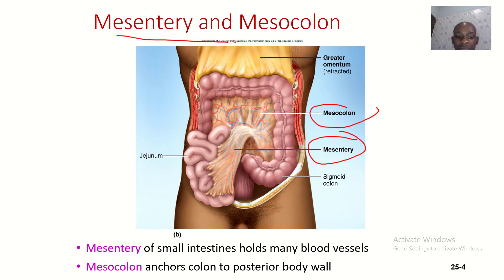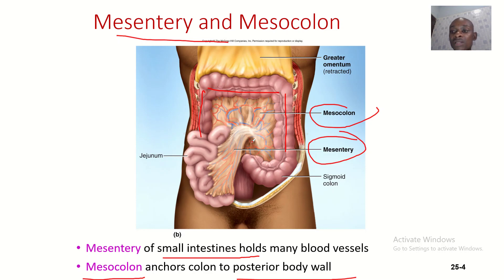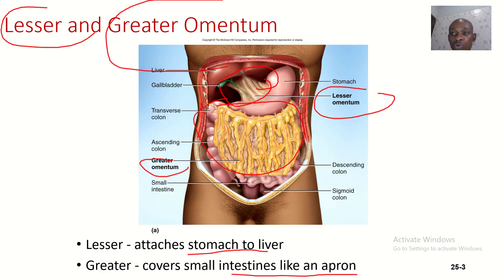Now for an overview of the mesentery and mesocolon: the mesentery of the small intestine holds many blood vessels and attaches the small intestine to the posterior abdominal wall. The mesocolon anchors the colon to the posterior abdominal wall. Here you can see the transverse colon, the ascending colon, and the descending colon — what attaches this part of the large intestine to the posterior abdominal wall is the mesocolon.